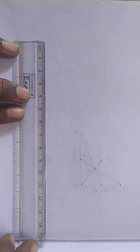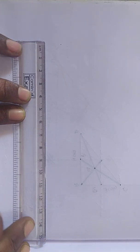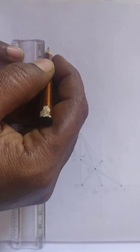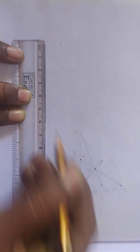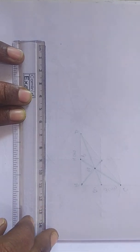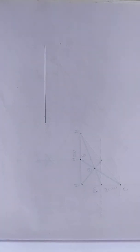Using scale and pencil, first let us draw a line segment 6 cm. Now we draw a line segment AB is equal to 6 cm.